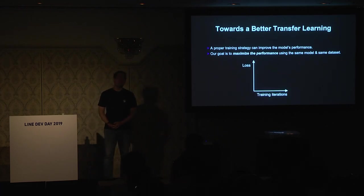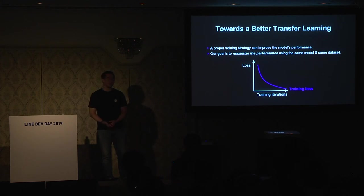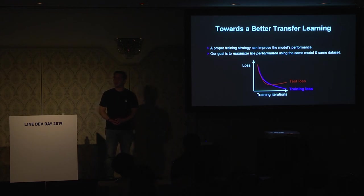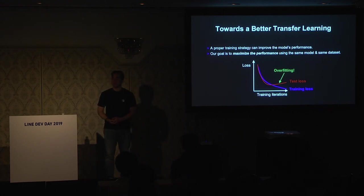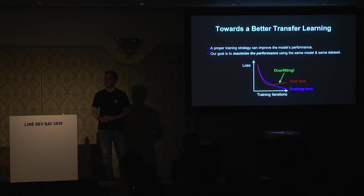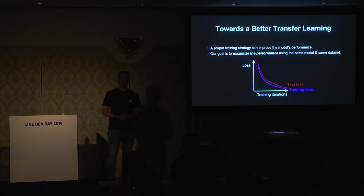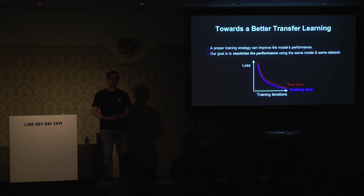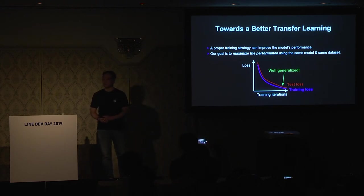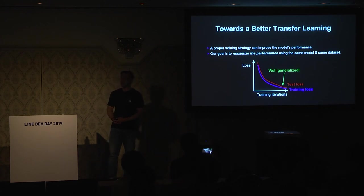When we train a deep model, training loss will decrease as expected, but sometimes test loss will increase as training iterations go on — this is called overfitting. Overfitting is a frequent problem, and a proper training strategy can solve it. If the overfitting problem is solved, the test loss will decrease as desired — this is called a well-generalized case — and the backbone model's performance is expected to improve.